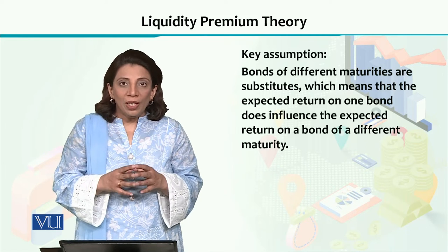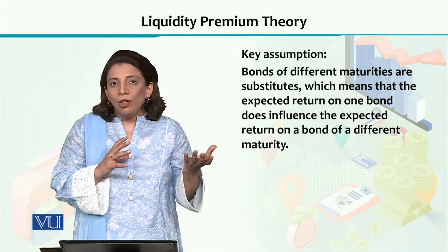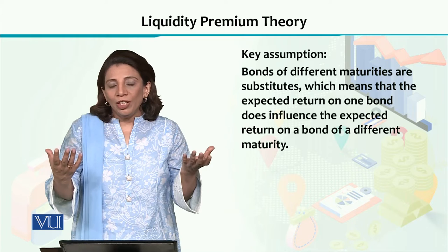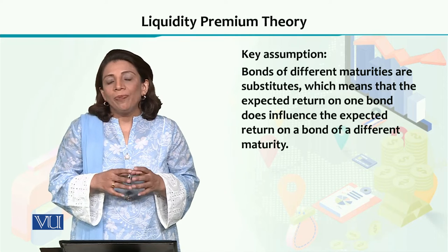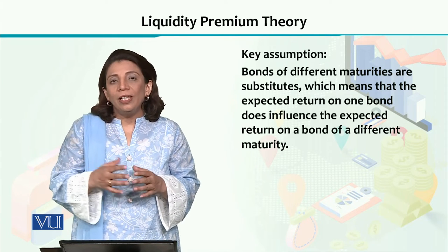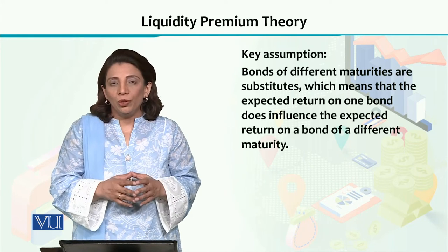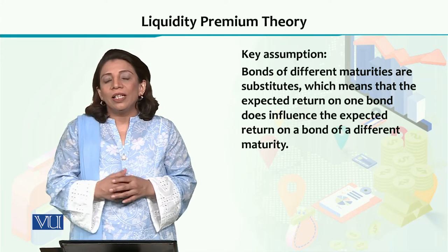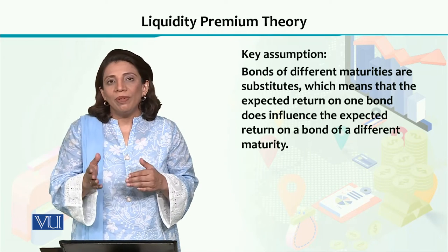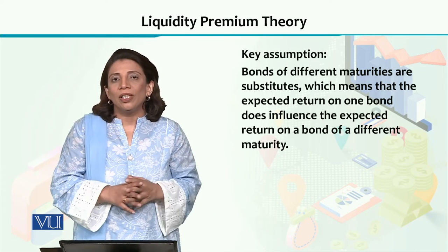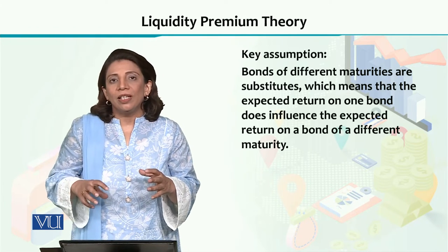We have a key assumption for this particular theory: long-term investment opportunities and short-term investment opportunities can be taken as substitutes of each other. The expectations theory said different bonds, whether short-term or long-term, are perfect substitutes. Then we have the segmented markets theory, which says they cannot be considered as substitutes, because investors seeking long-term investment operate in completely different markets than those seeking short-term investment.